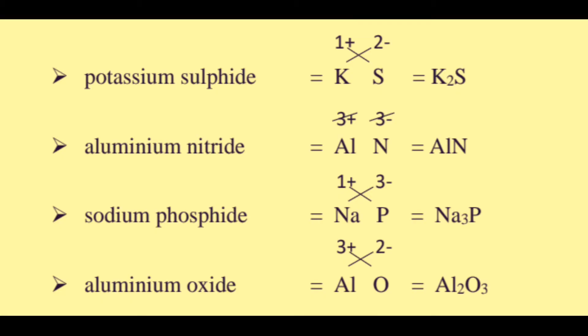Potassium sulfide. Potassium is K with oxidation number 1 plus. Sulfide is S with oxidation number 2 minus. 1 plus and 2 minus — we cross the numbers.